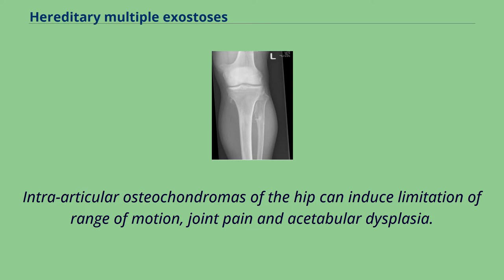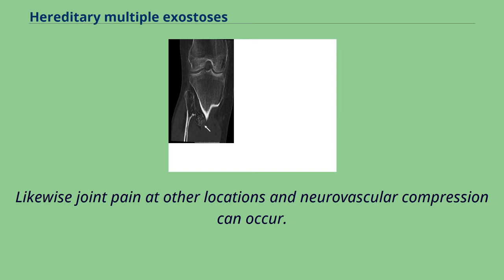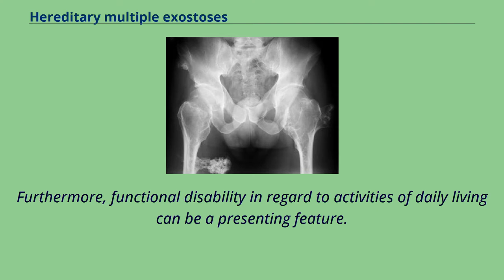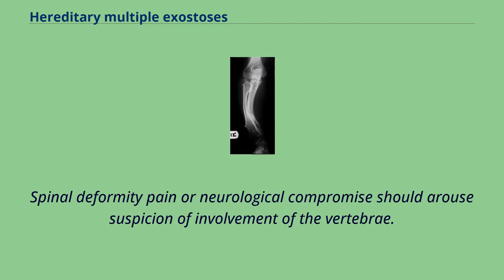Intra-articular osteochondromas of the hip can induce limitation of range of motion, joint pain, and acetabular dysplasia. Likewise, joint pain at other locations and neurovascular compression can occur. Functional disability in regard to activities of daily living can be a presenting feature. Spinal deformity, pain, or neurological compromise should arouse suspicion of involvement of the vertebrae.